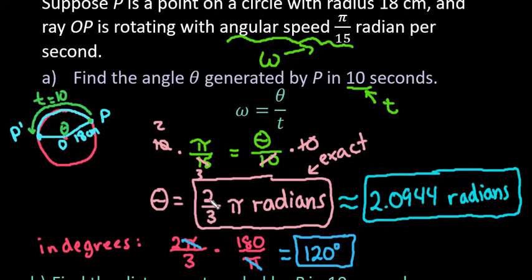If you want it as an exact answer, you would leave it in terms of pi, and this would be an approximate answer in terms of radians. So we found the angle theta generated by p in 10 seconds. So after 10 seconds, it has rotated 120 degrees. So let's move on to the next thing.